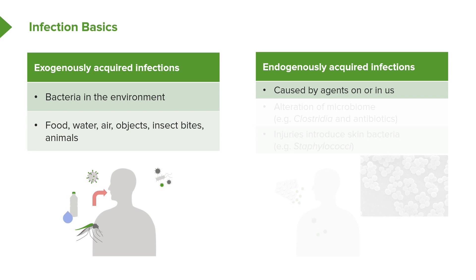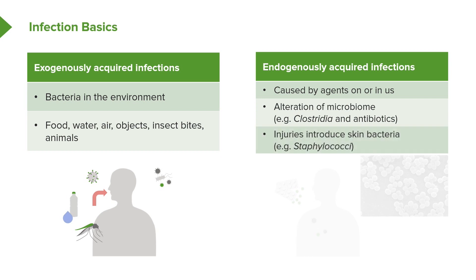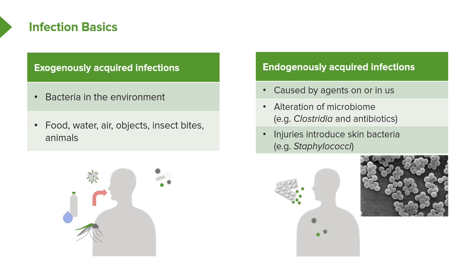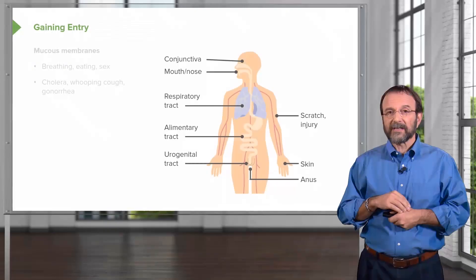Endogenous infection can occur because we've altered the microbiome by treatment with antibiotics. Clostridial infections of the intestine are a great example: we alter the composition of this microbial community, and then clostridia overgrow and cause us problems. Sometimes injuries introduce skin bacteria into us, and this is commonly seen with staphylococci, normal inhabitants of the skin. When an injury introduces them below the skin, this can cause a problem. So we get infections from external sources and from within ourselves.